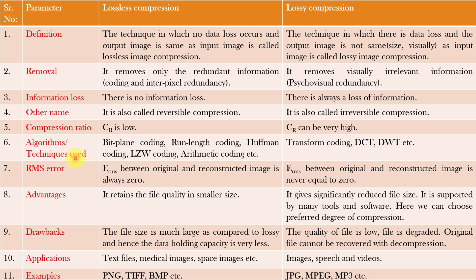The algorithms or techniques used for lossless compression are bit plane coding, run length coding, Huffman coding, LZW coding, arithmetic coding, etc., which we have learned in the previous video classes. The examples of lossy compression algorithms are transform coding, DCT (discrete cosine transform), discrete wavelet transform, etc. DCT is used for JPEG compression.